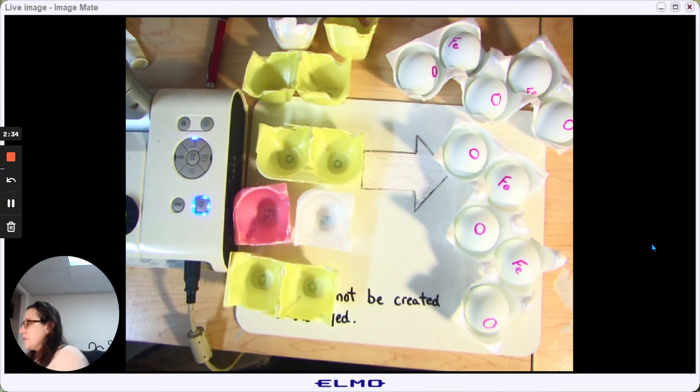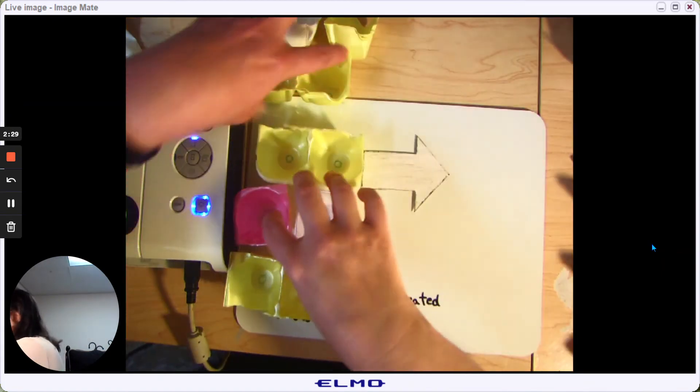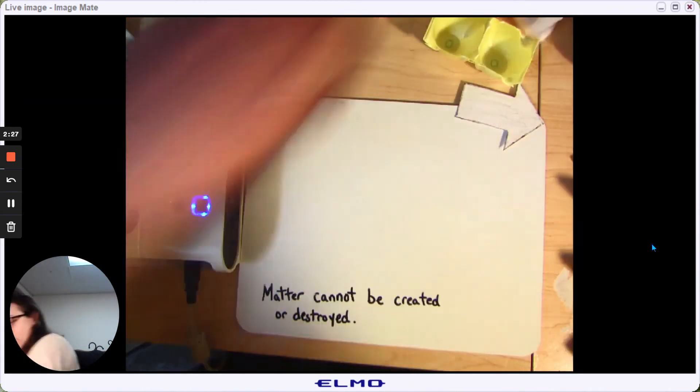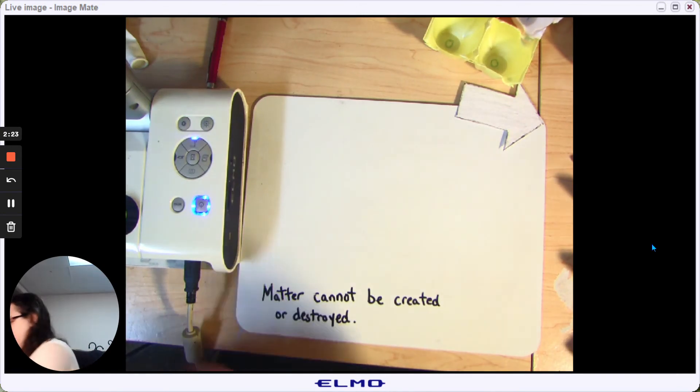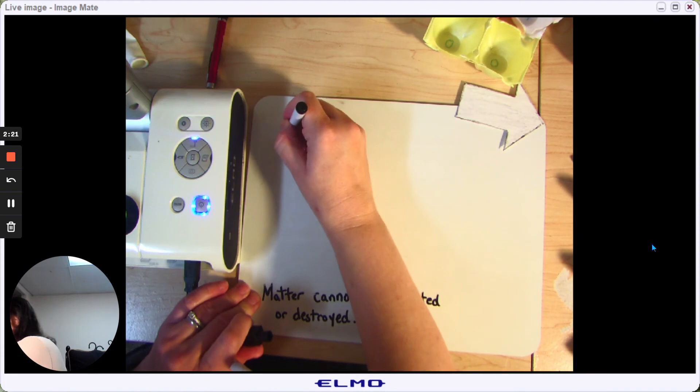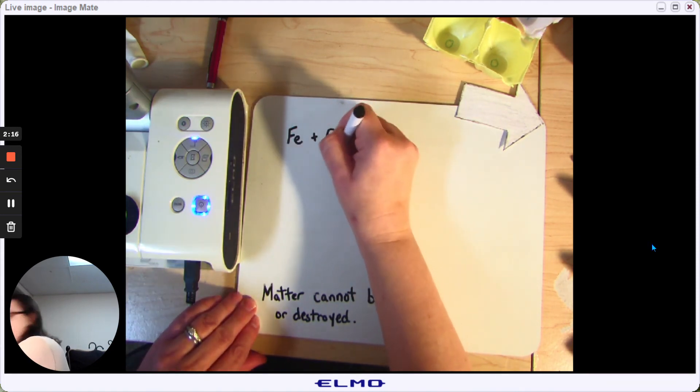Let's look at what this looks like when we write it out with symbols. With symbols, we write the chemical reaction. We had the iron, we had the oxygen that goes in pairs.